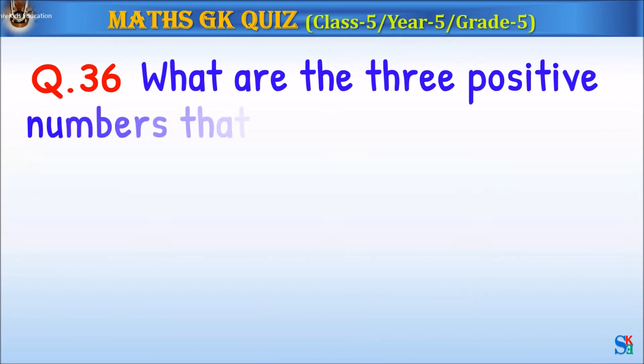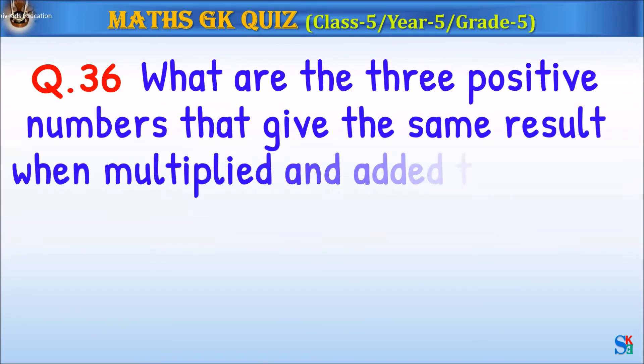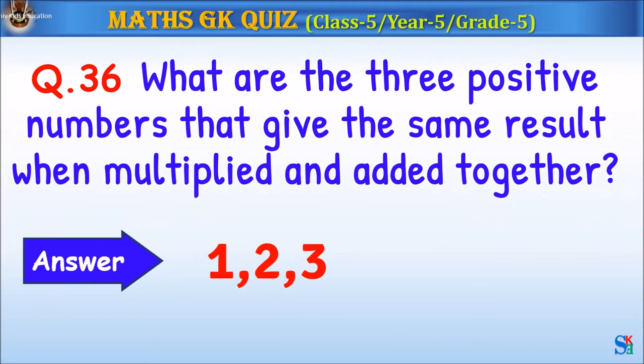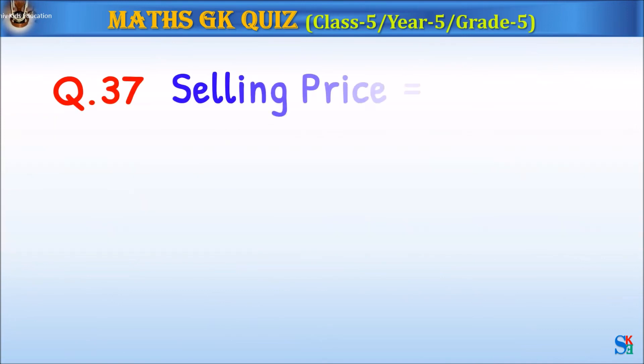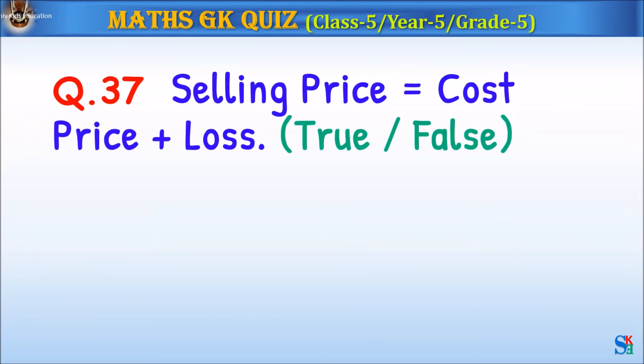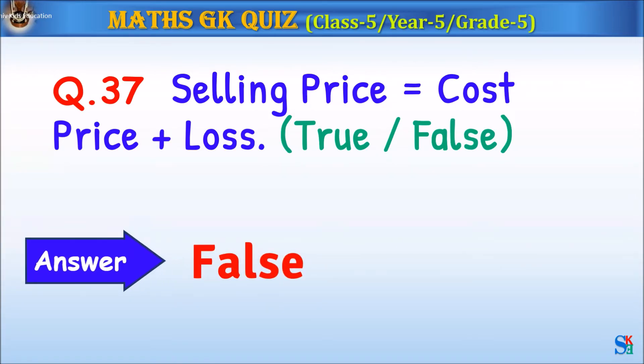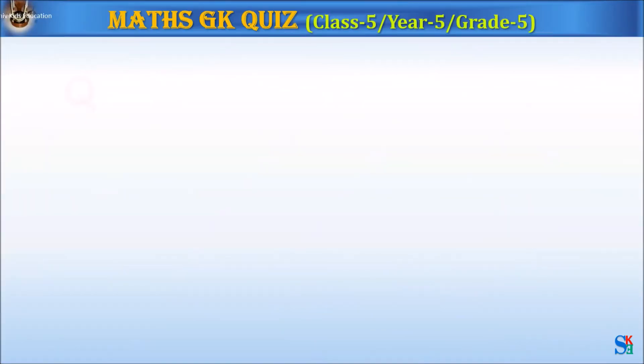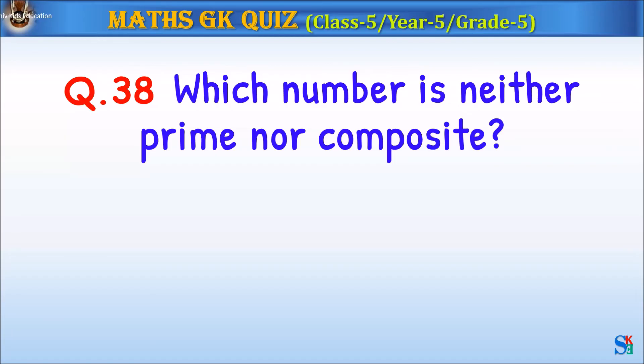Question 36: What are the three positive numbers that give the same result when multiplied and added together? The answer is 1, 2, and 3. Question 37: Is the selling price equal to the cost price plus loss, true or false? The answer is false.